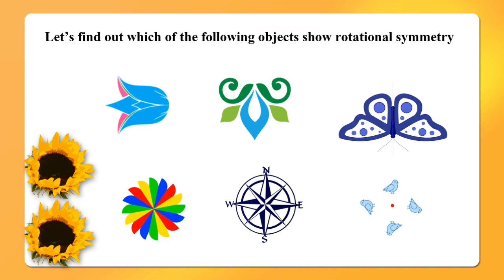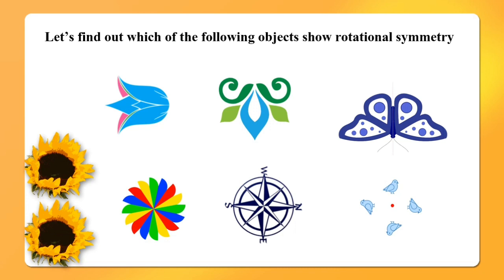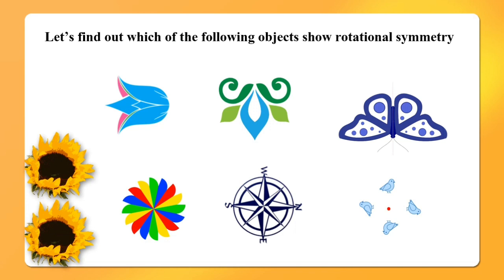The fifth figure is a compass showing north, east, south, west. Rotate it clockwise through a quarter (1/4) turn. N comes to the E position, E comes to the S position, S goes to the W position, and W goes to the N position. The figure looks exactly the same as before, so it shows rotational symmetry. The sixth figure has four birds. After rotating, the figure with four birds looks exactly the same as before. So this also shows rotational symmetry.